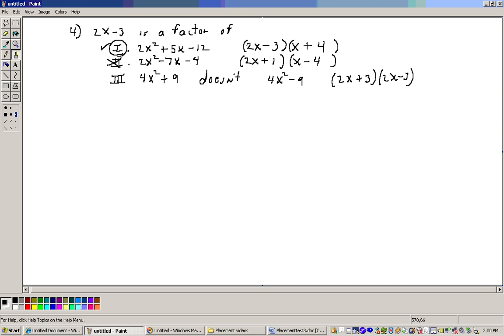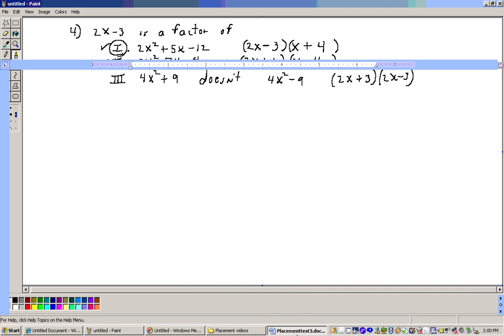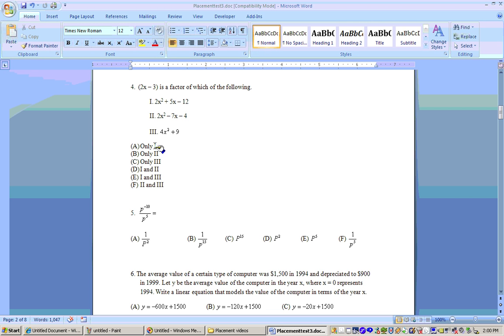The only one that factors and has a factor of 2x minus 3 is the first one. When you look at the choices on this problem, it says only one, only two, only three, and so on. It's only one - only choice one has that factor.